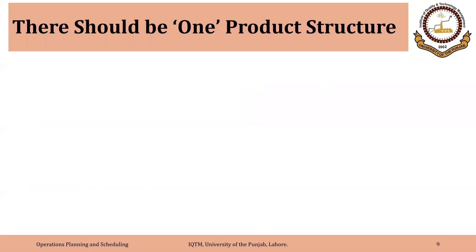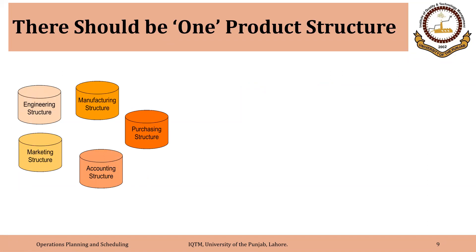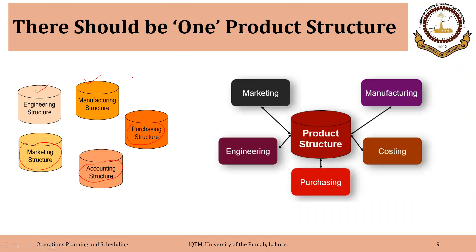One important point to keep in mind is there should be one product structure. Traditionally, different departments had different definitions of the product structure — for example, engineering and manufacturing departments had a different product definition than marketing or purchasing, creating discrepancies. But nowadays, especially with the help of software, there is a single agreed-upon definition.